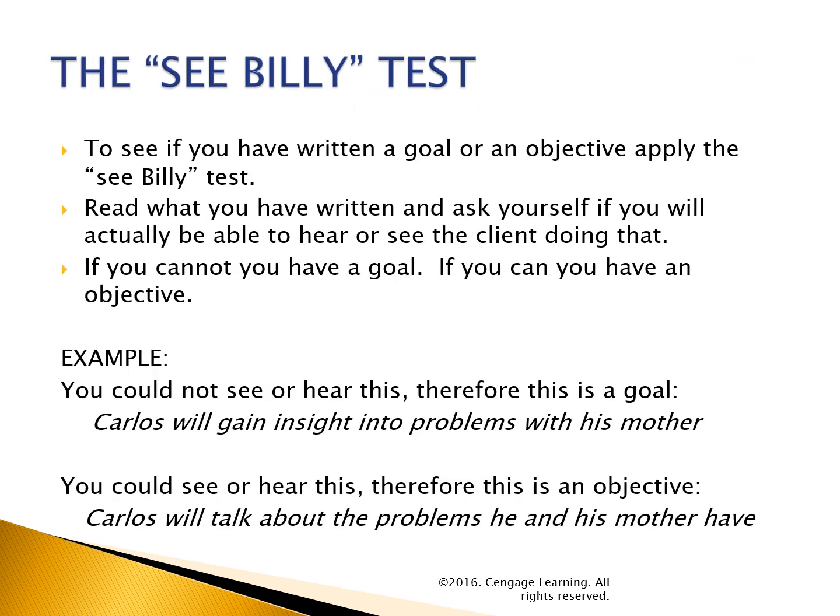The See-Billy test. To see if you have written a goal or an objective, apply the See-Billy test: read what you have written and ask yourself if you will actually be able to hear or see the client doing that. If you cannot, you have a goal. If you can, you have an objective. Example: you cannot see or hear this, therefore this is a goal — 'Carlos will gain insight into problems with his mother.' You could see or hear this, therefore this is an objective — 'Carlos will talk about the problems he and his mother have.'